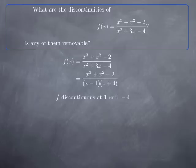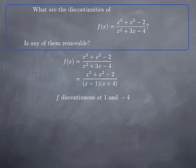At x = -4, if we plug x = -4 into the numerator, we get (-4)³ + (-4)² - 2 = -64 + 16 - 2 = -50. So the numerator is non-zero and the denominator approaches zero. Therefore we get an infinite limit, which means the limit of f at -4 does not exist. Therefore, the discontinuity at -4 is non-removable.